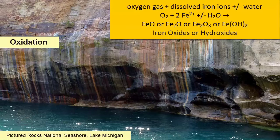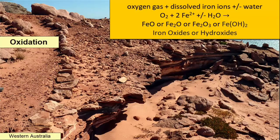Manganese oxides are black; copper oxides are bright blue. Iron oxides are the most common oxides found on the surfaces of rocks, and usually when you see a red-colored rock from a distance, you're looking at the oxide stains on its surface.